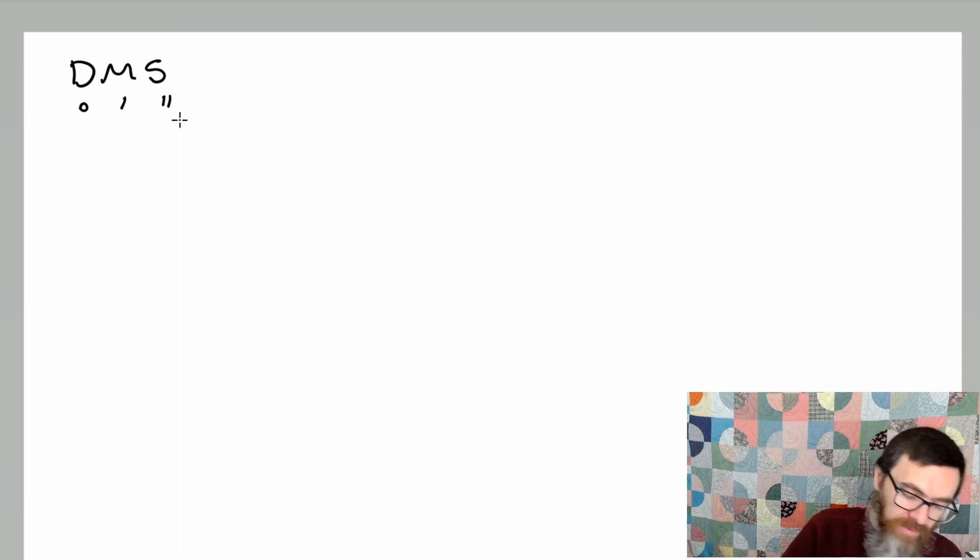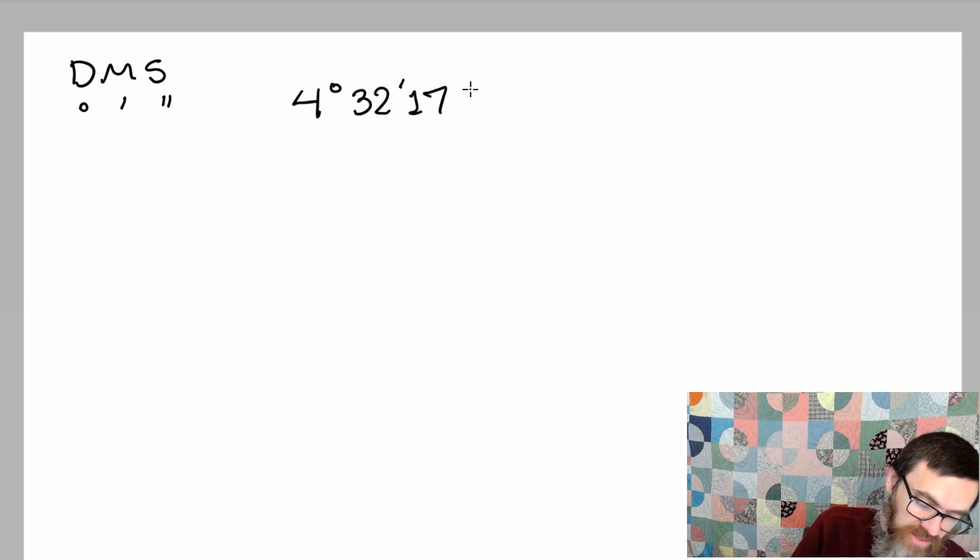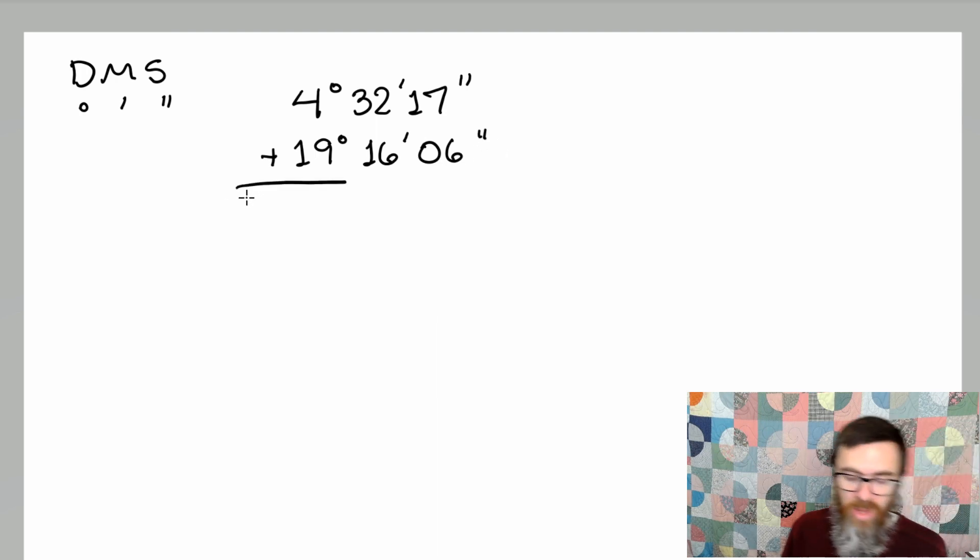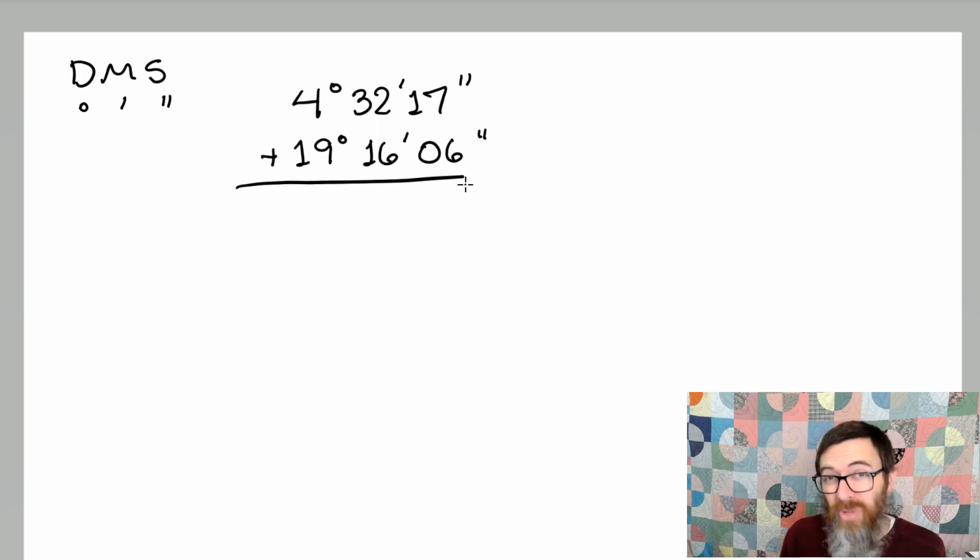Let's take example number one that we have in the notes. If I have 4 degrees, 32 minutes, and 17 seconds, plus 19 degrees, 16 minutes, and 6 seconds. We're going to add these just like we would add anything else. You add like terms with like terms. So you want to line these things up so you have degrees together, minutes together, seconds together.